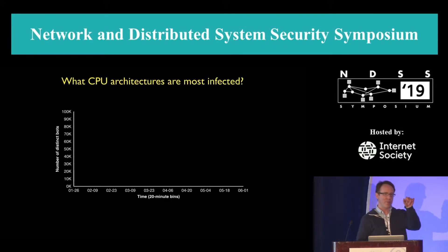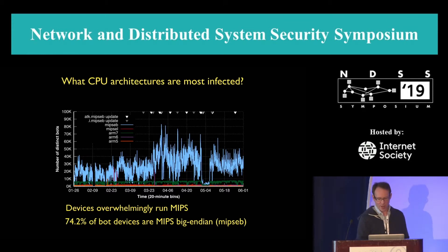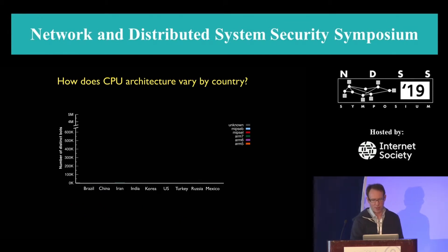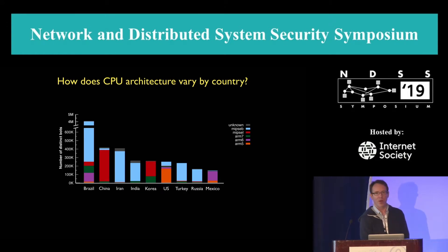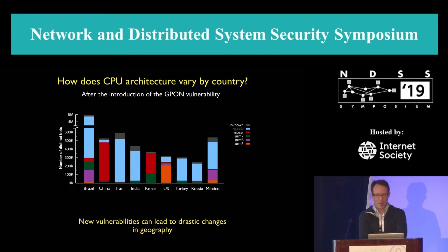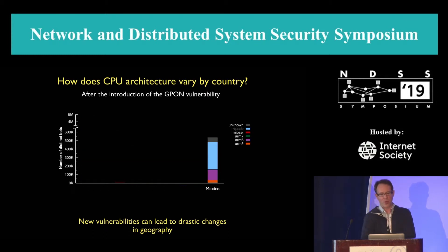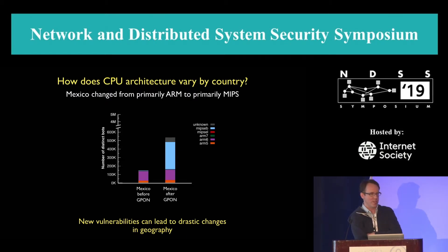Recall that the file name we look up in the DHT encodes the architecture. So the natural question is: what is the breakdown of architectures these bots are running on? Overwhelmingly, almost three-quarters of bots run on MIPS Big Endian. However, if we drill down to the country level, things get more interesting. In both the U.S. and Mexico, they're very ARM-heavy countries. Again, an exploit can change this composition overnight. If we look at G-Pon, it takes Mexico — which was one of the less infected countries — and makes it the third most infected country. Moreover, Mexico, which was ARM-heavy to begin with, becomes MIPS Big Endian heavy. New vulnerabilities can overnight change the composition of the botnet.